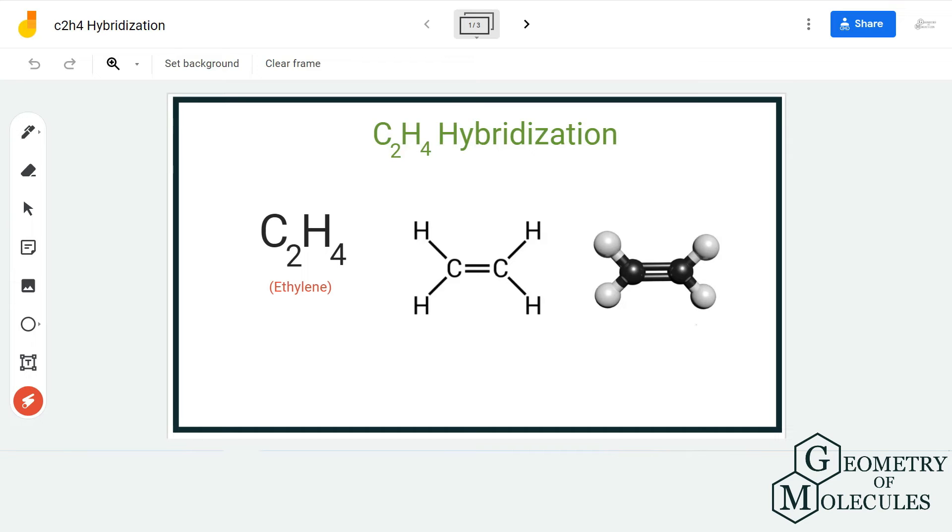Hi guys, welcome back to our channel. In today's video we are going to help you determine the hybridization for C2H4 molecule. It is known as ethylene or ethene; both nomenclatures are accepted for this molecule.